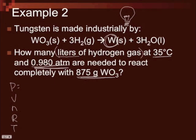P-V-N-R-T. So my pressure is 0.98 atmospheres. My volume, it says how many liters of hydrogen, so that's my unknown. My number of moles, I don't have any moles. I'm going to leave a big old empty box there because I need that information. My R is always going to be 0.0821. And my temperature, 35 degrees Celsius plus 273 is 308 Kelvin.